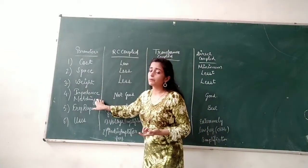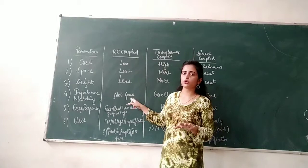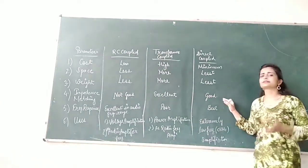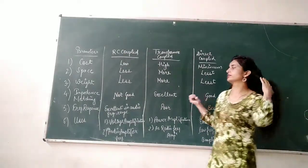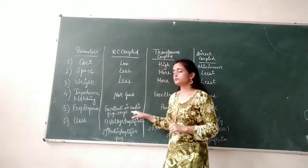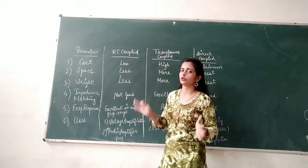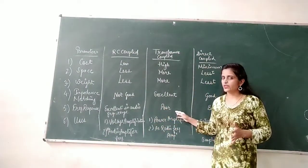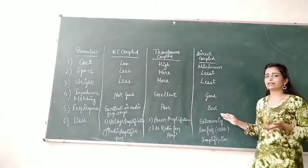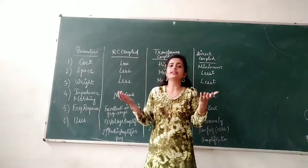Regarding impedance matching: the RC coupled amplifier does not have good impedance matching, the transformer coupled amplifier has excellent impedance matching, and the direct coupled amplifier has good impedance matching. Regarding frequency response: the RC coupled amplifier has an excellent frequency response in audio frequency ranges, the transformer coupled amplifier has a poor frequency response as it provides frequency distortion, but the direct coupled amplifier has the best frequency response because it only deals with extremely low frequencies.